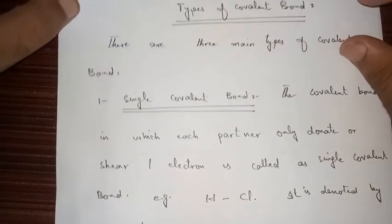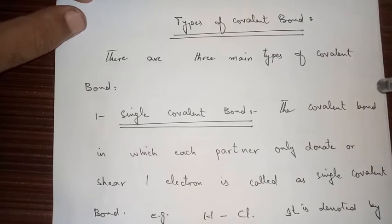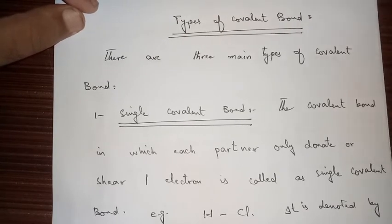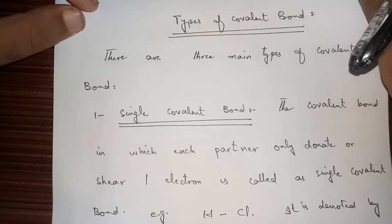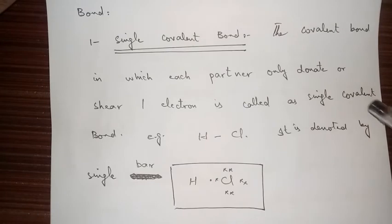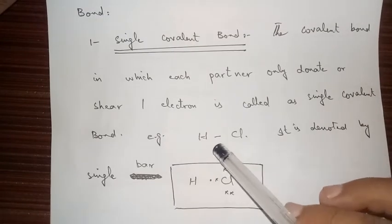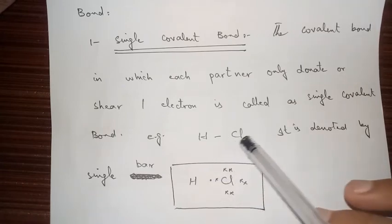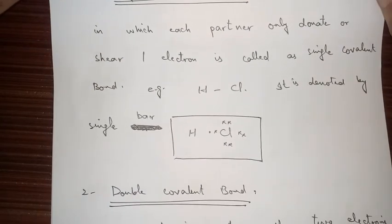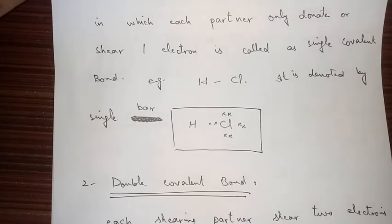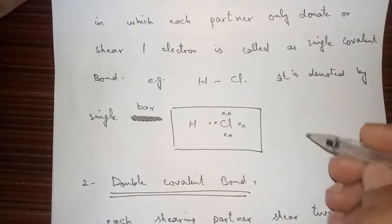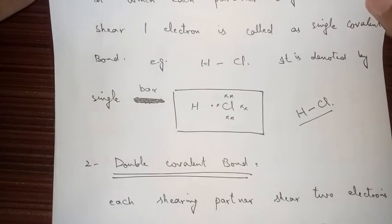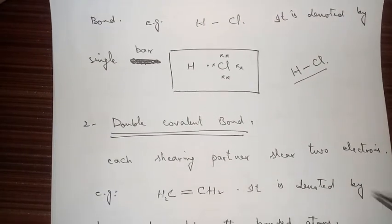There are three main types of covalent bond: the single bond, the double bond, and the triple bond. The single covalent bond is the bond in which each partner shares one electron. For example, HCl — hydrogen and chlorine each share one electron to form a single covalent bond. This single bond is denoted by a single bar or line between the bonded atoms.